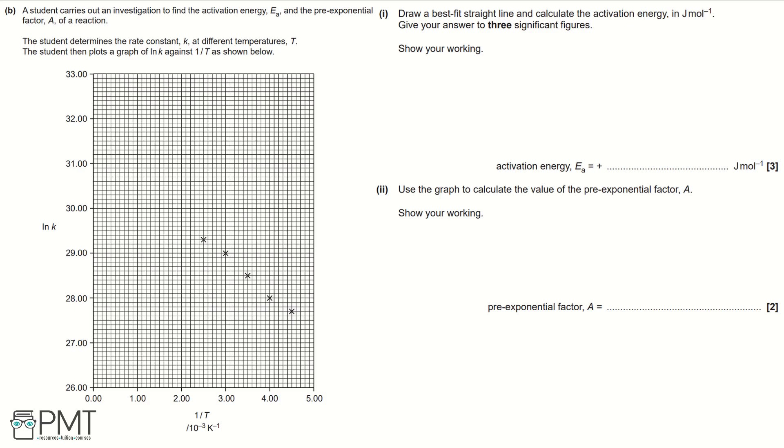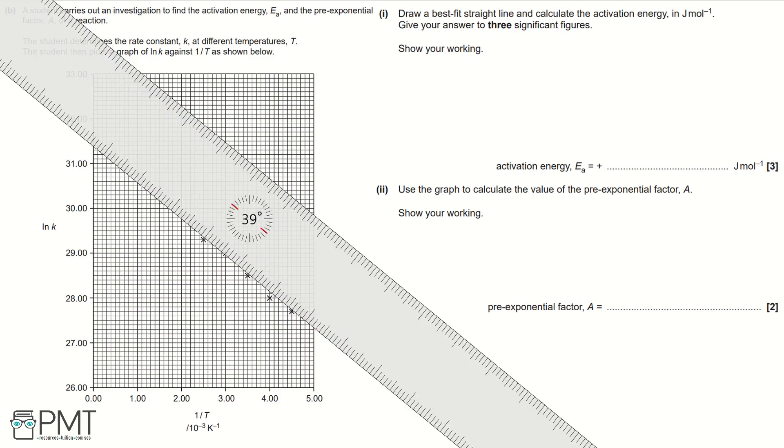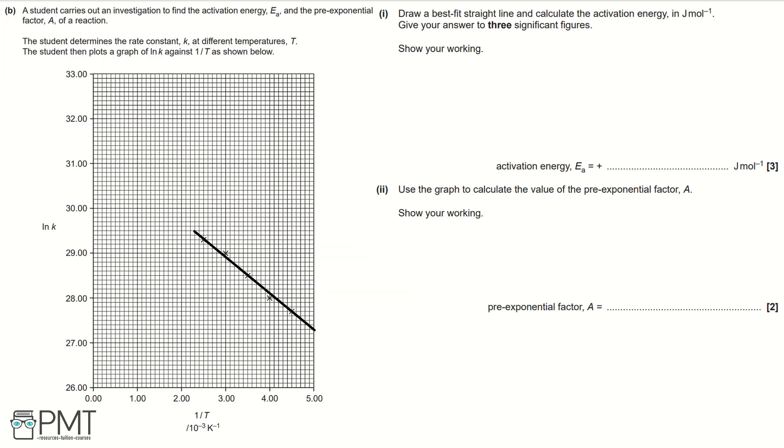Part B: A student carries out an investigation to find the activation energy Eₐ and the pre-exponential factor A of a reaction. The student determines the rate constant K at different temperatures T. The student then plots a graph of ln K against 1 over T as shown below. Part 1: Draw a best fit straight line and calculate the activation energy in joules per mole. Give your answer to three significant figures and show all your working. Firstly, we need to draw our line of best fit. We need a ruler and the line of best fit does not need to intercept the y-axis here. We are just drawing our line of best fit for the range of the data points we've been given.